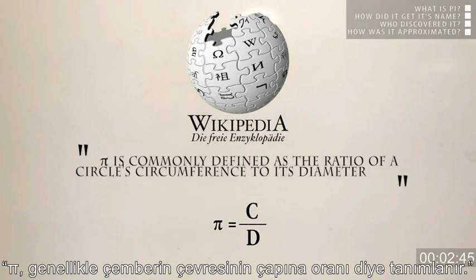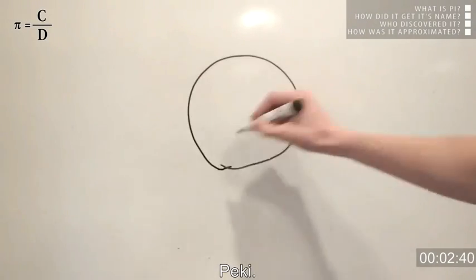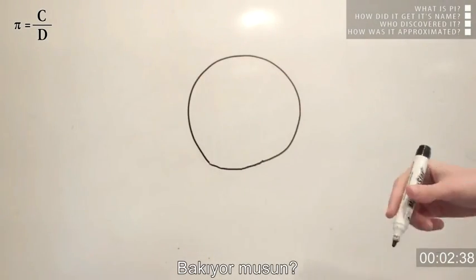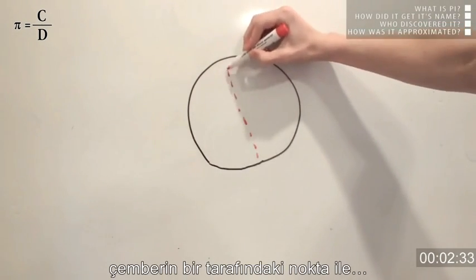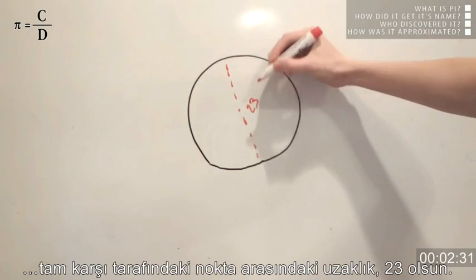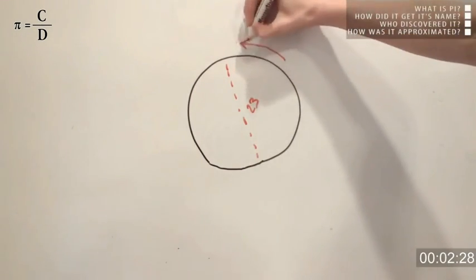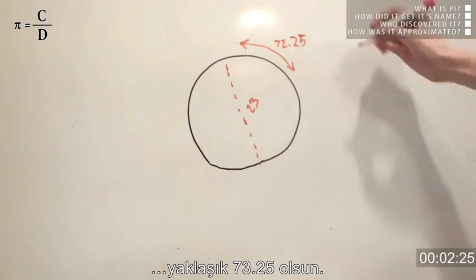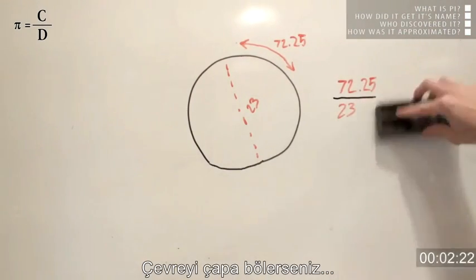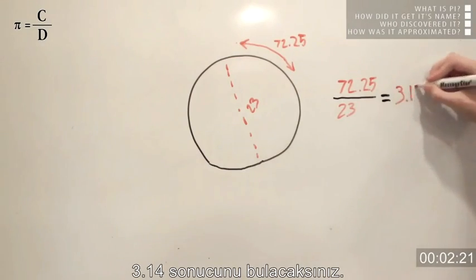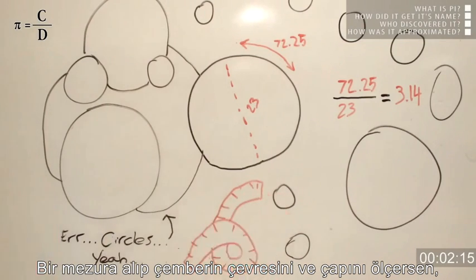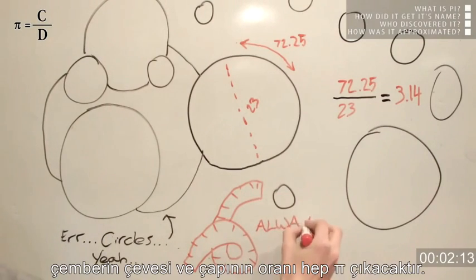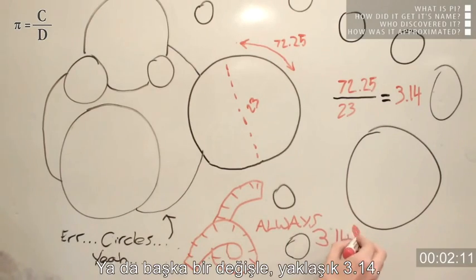Pi is commonly defined as the ratio of a circle's circumference to its diameter. Look at this circle here. The diameter of this circle — which is the distance from one side of a circle to a point on the direct opposite side — is 23. And the circumference, which is the distance around the entire circle, is about 72.25. If you divide the circumference by the diameter, you're going to get 3.14. This applies to all circles. If you get a tape measure and measure the diameter and the circumference of a circle, the ratio will always be pi, or approximately 3.14.